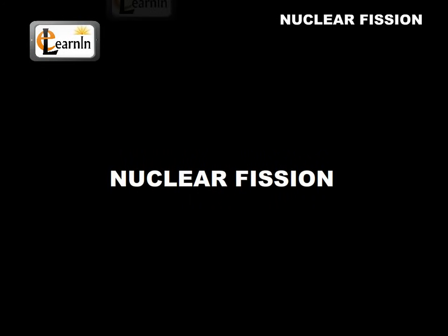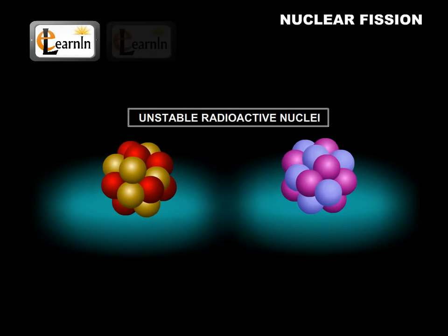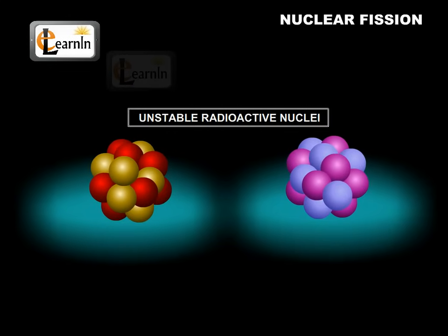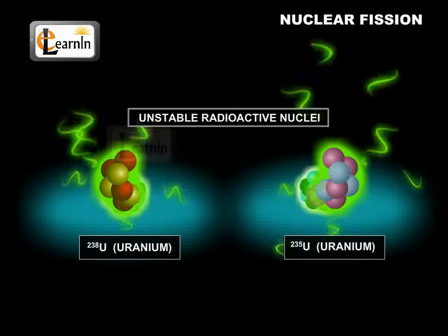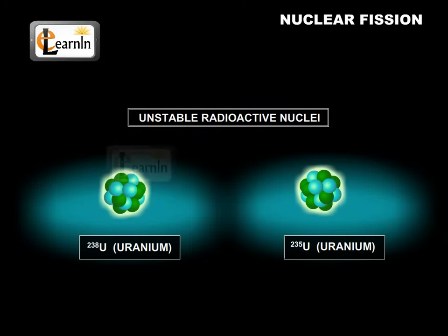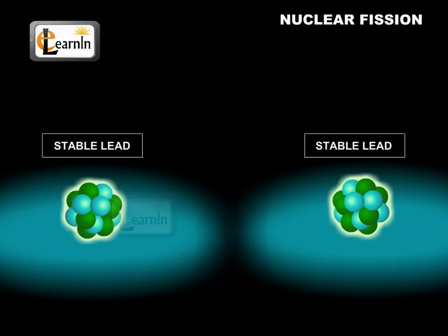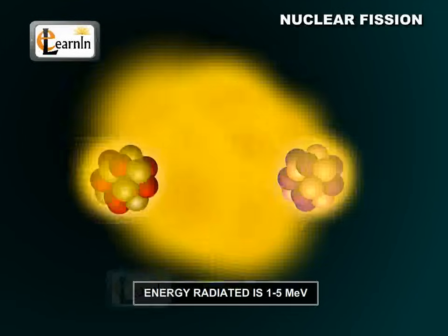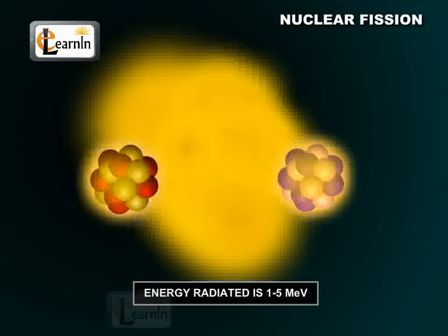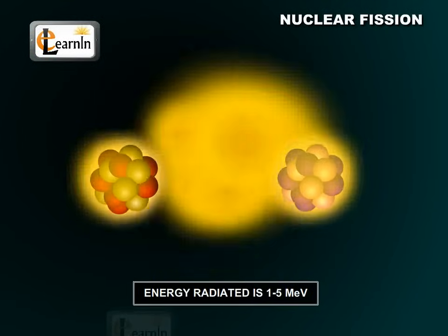In this video, we're going to talk about nuclear fission. Unstable radioactive nuclei, which occur naturally, sometimes emit strong radiations, especially in isotopes of uranium like uranium-238 or uranium-235. The disintegration converts the uranium isotope into stable lead and in the process emits energy in the range of 1 to 5 mega-electron volts — that's 1 to 5 million electron volts — and even higher amounts of energy can be released by breaking unstable nuclei into even more parts.